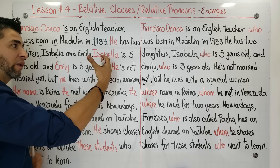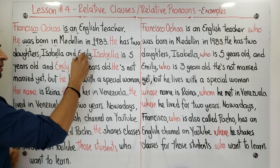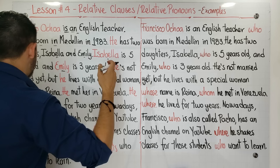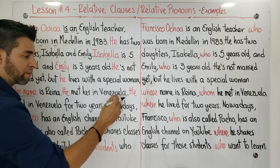Notice that I mentioned Isabela here and I'm mentioning Isabela again — I'm repeating this name. 'Isabela is five years old and Emily is three years old.' I'm repeating Emily too. This is additional information. 'He is not married yet, but he lives with a special woman.'